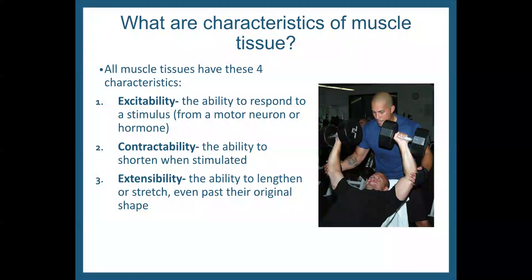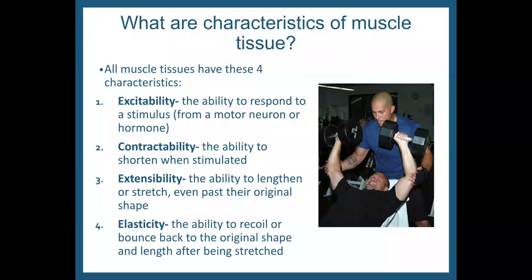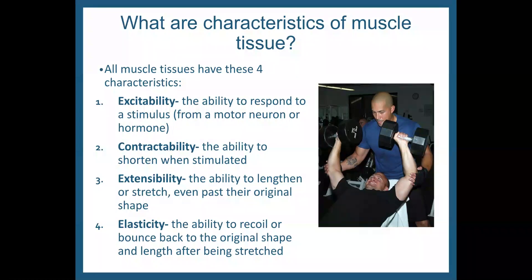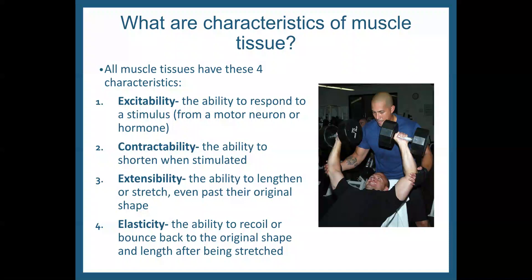Third, extensibility — the ability to lengthen or stretch even past the original shape. And fourth, elasticity — the ability to recoil or bounce back to the original shape after it's been stretched. So these are four characteristics of muscle tissue.